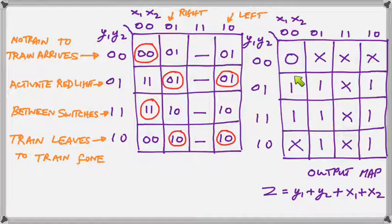So when we come to our output map the only time we want is zero, the only time we want is zero is when we are safe. All these other things we want the red light to be on.